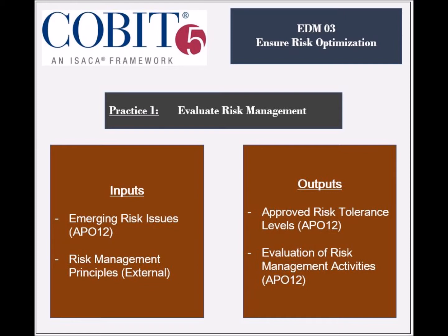Additional input comes from enterprise risk management principles from external sources. The practice generates three outputs: the risk appetite guidance, the approved risk tolerance levels, and the evaluation of risk management activities — all used by the APO-12 process.